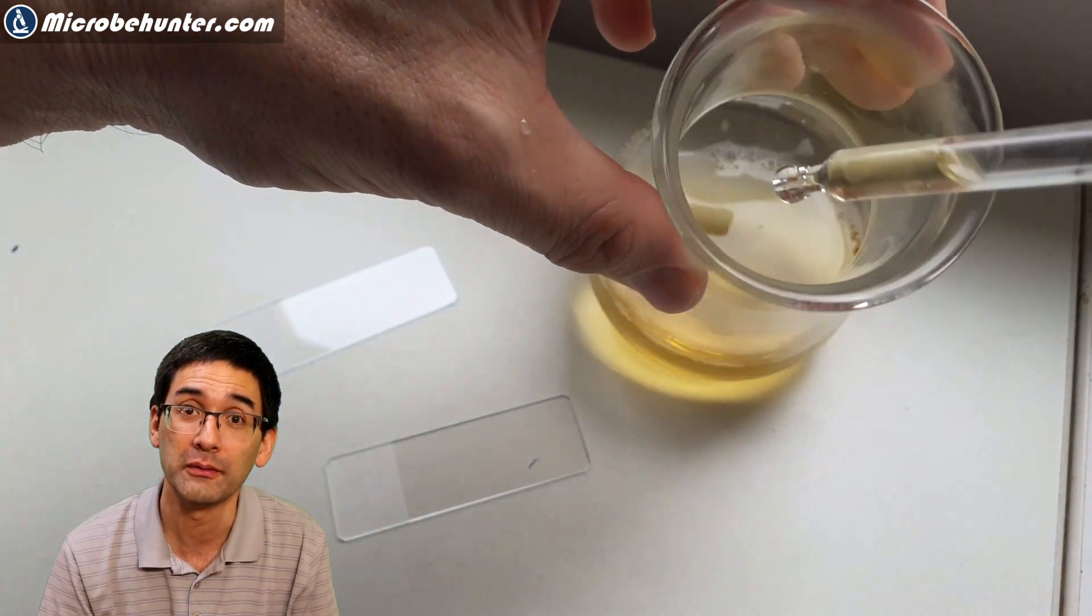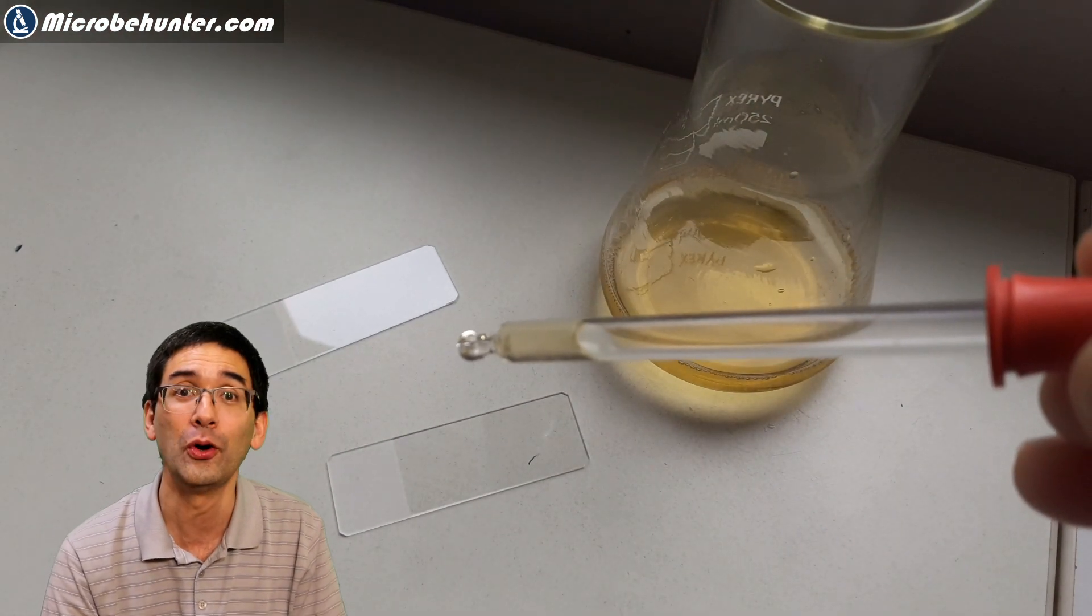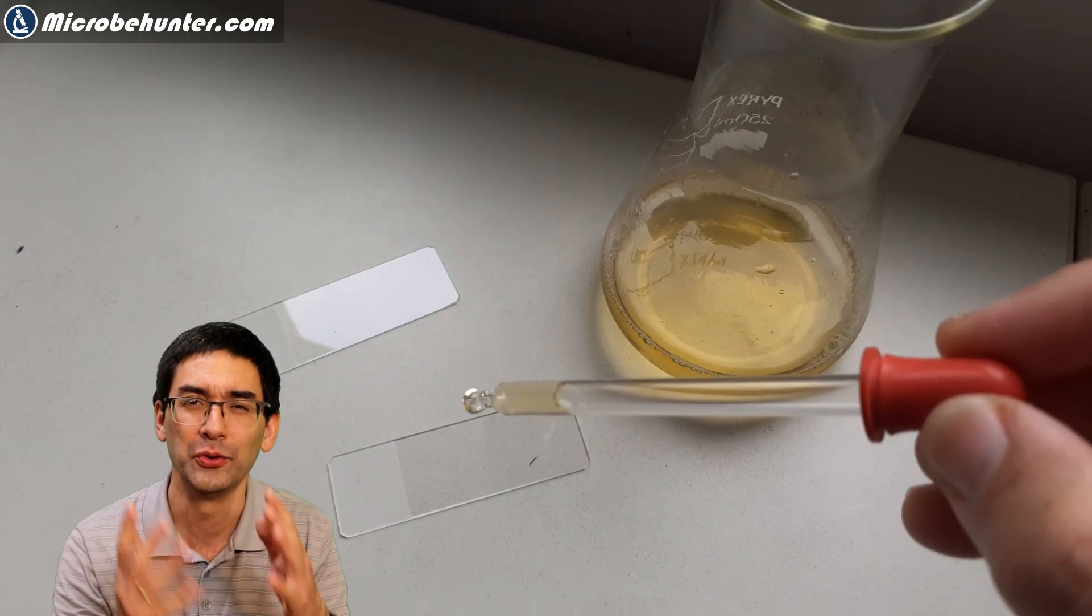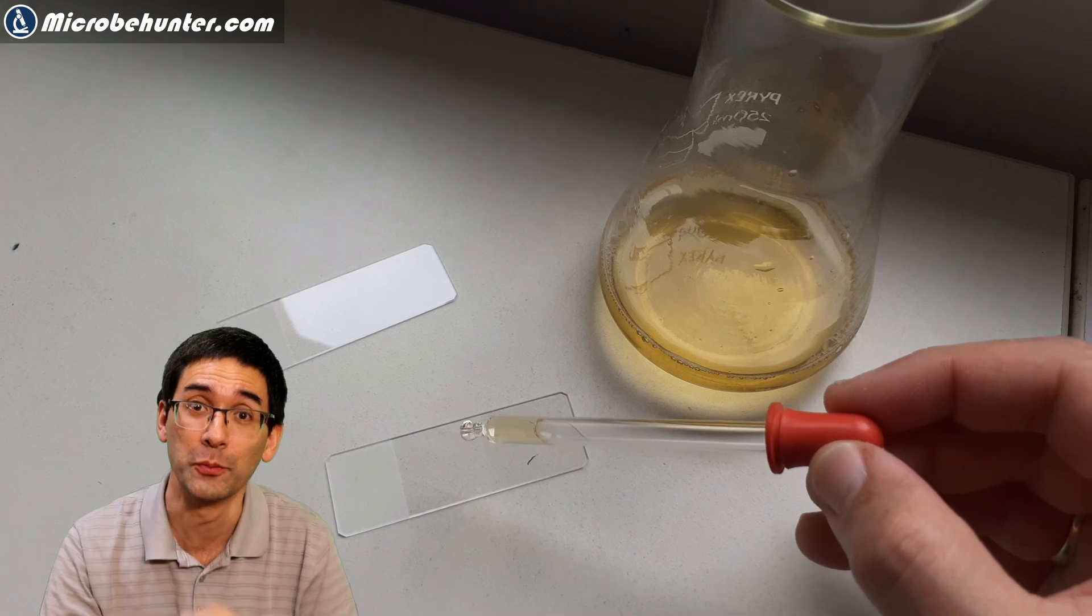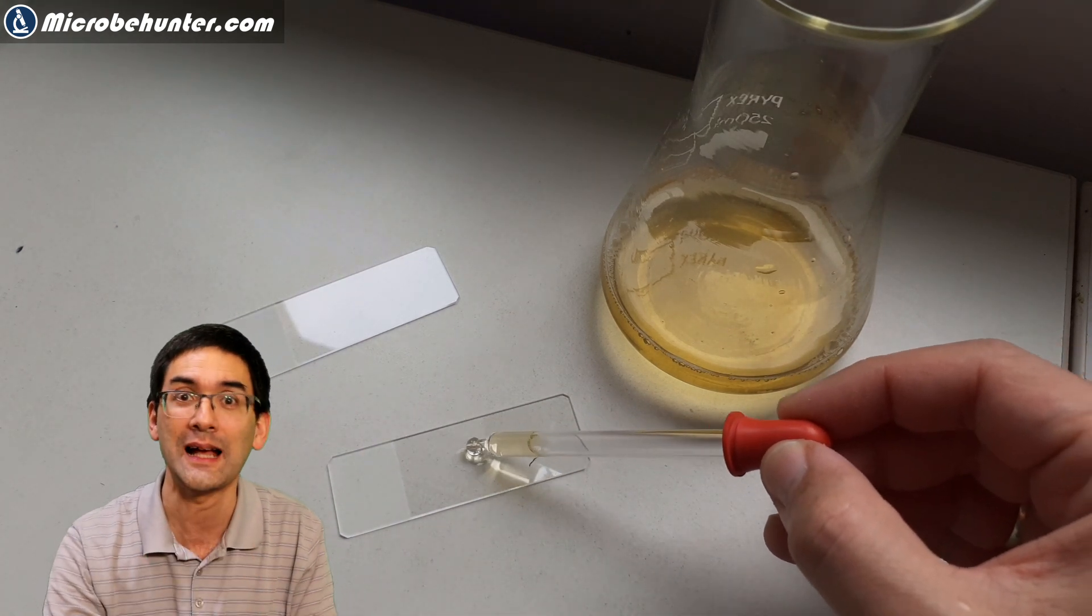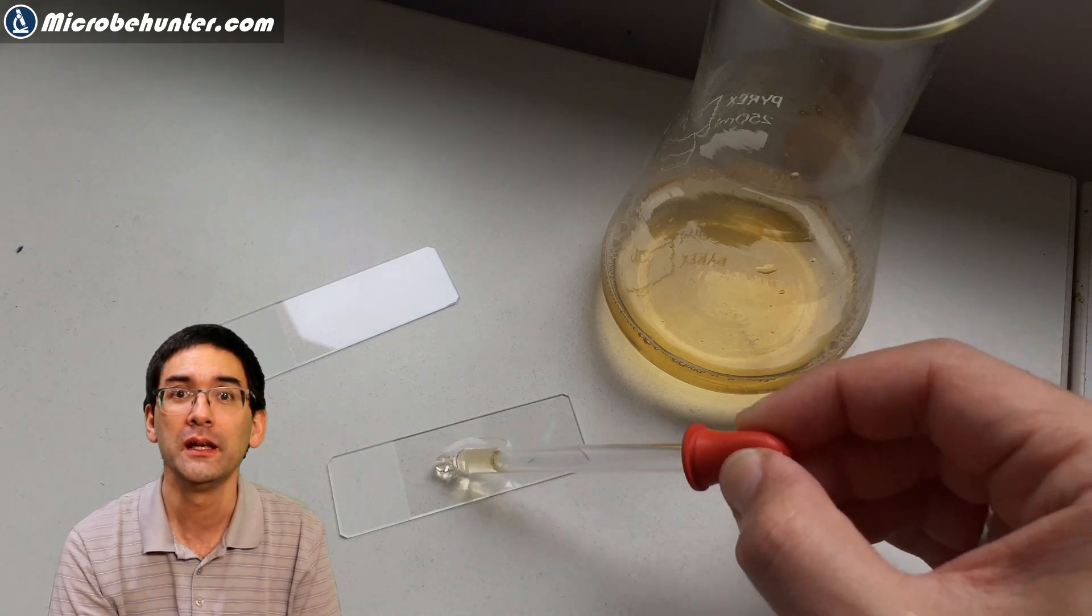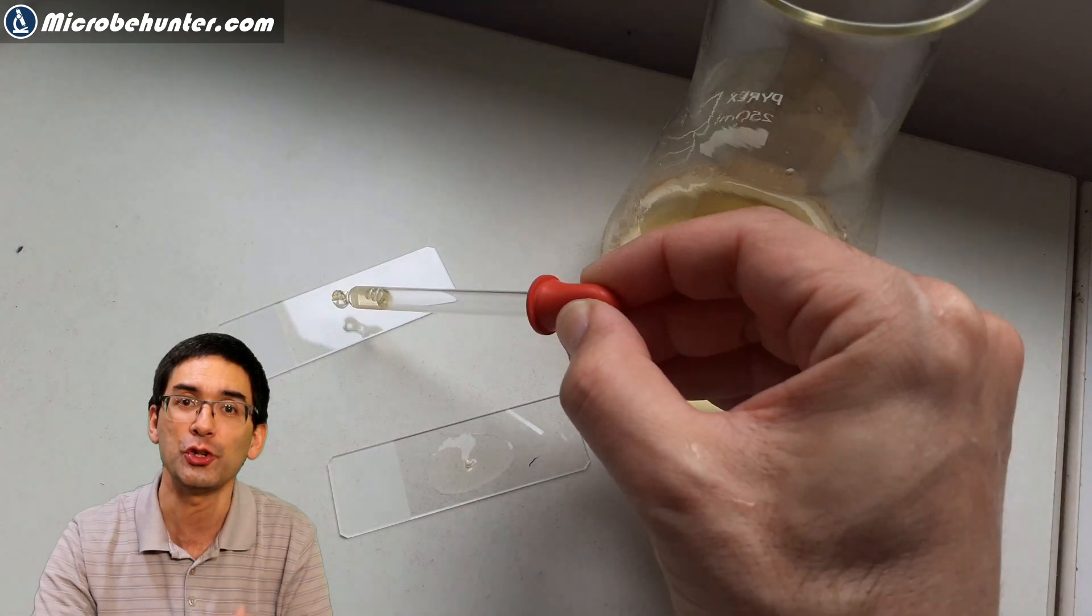Pretty self-explanatory. I took a dropper pipette and put some drops of urine directly on a microscope slide, not on a cover glass. I simply allowed it to dry with no cover glass on top. I don't want the cover glass to interfere with the crystallization process.